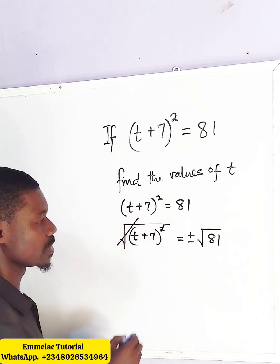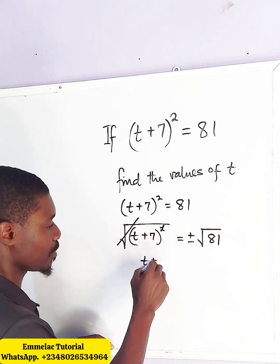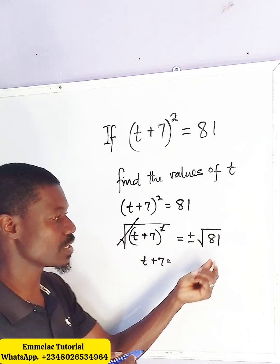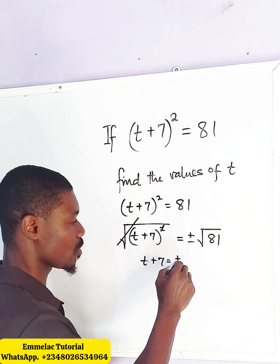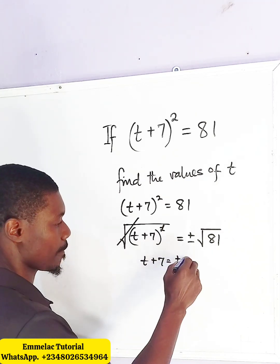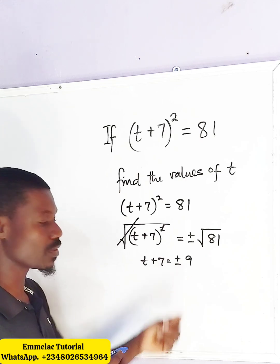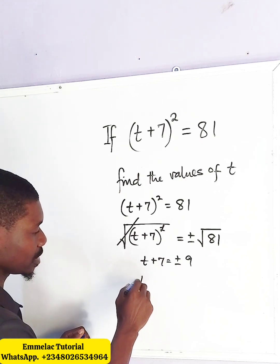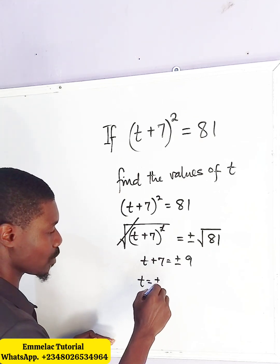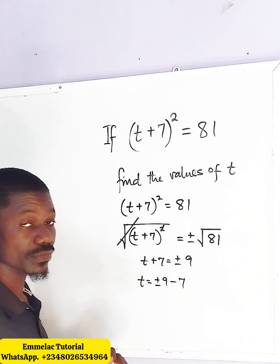This square root, we eliminate the square, so we have t+7 equals, now the square root of 81 is 9. So it implies that this equation here equals plus or minus 9, so t will then be plus or minus 9 minus 7.